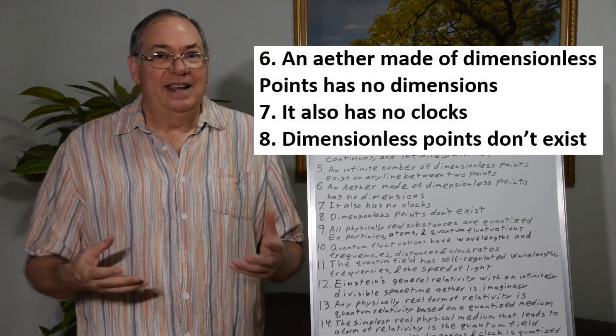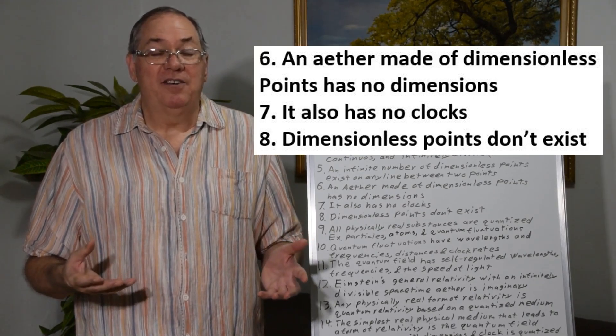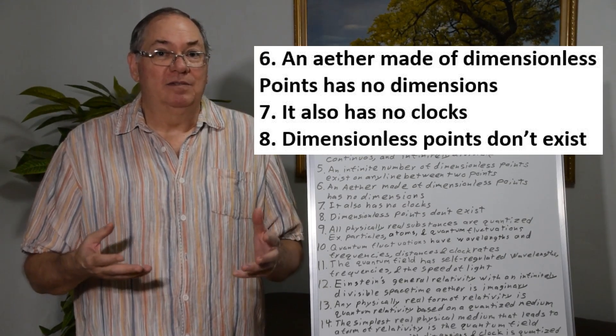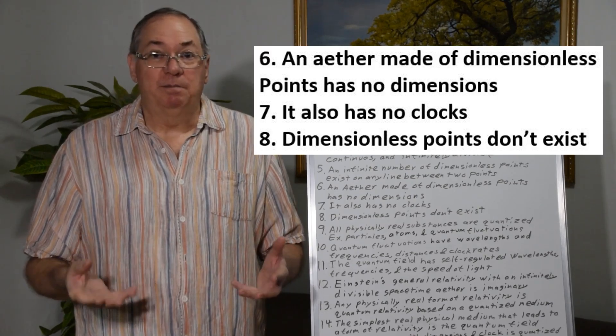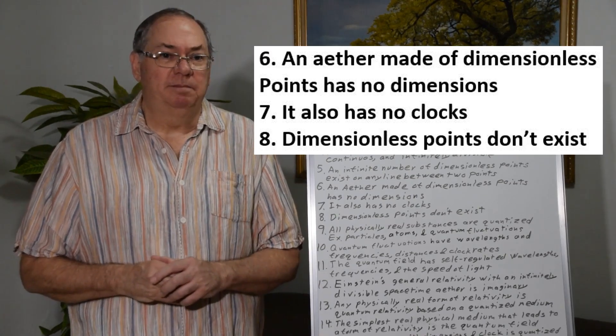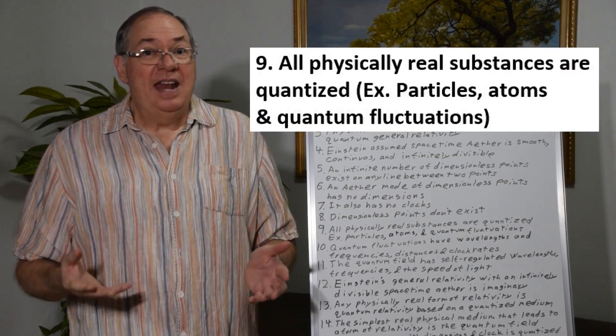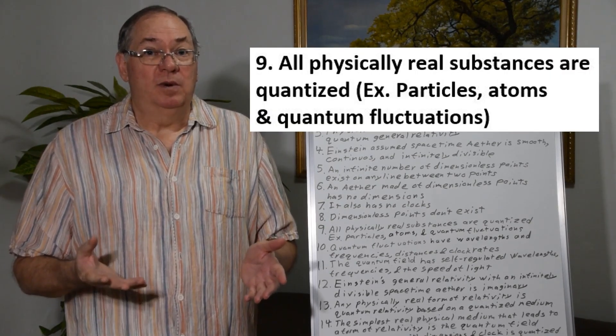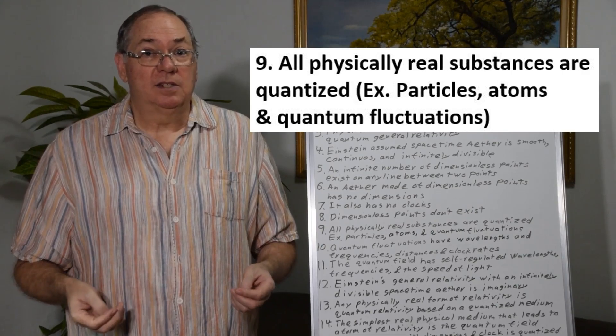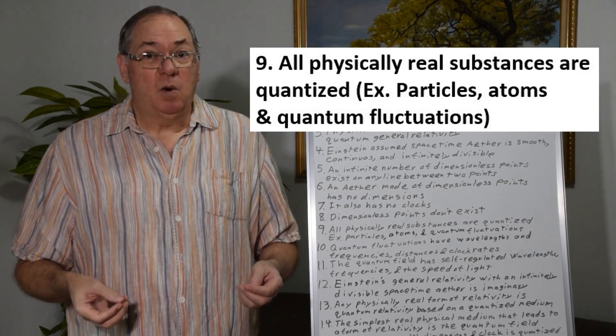So Einstein's idea is purely imaginary. His substrate for his relativity, both special and general relativity. So what it comes down to is any real substance we may look for to find out where these dimensions and clocks come from are quantized.